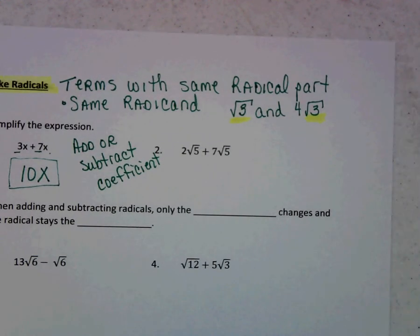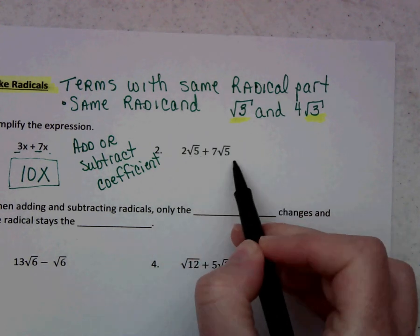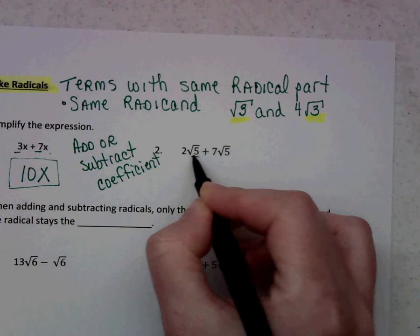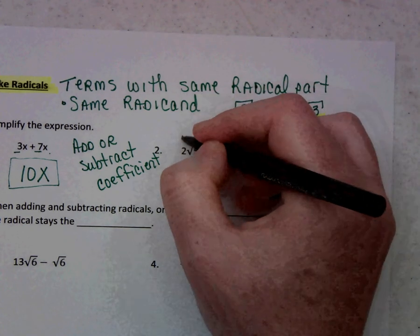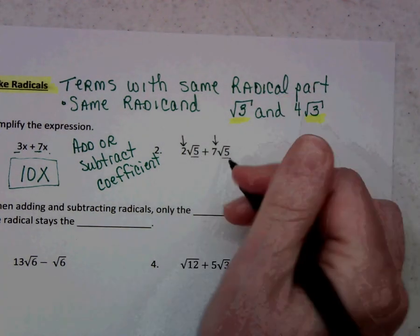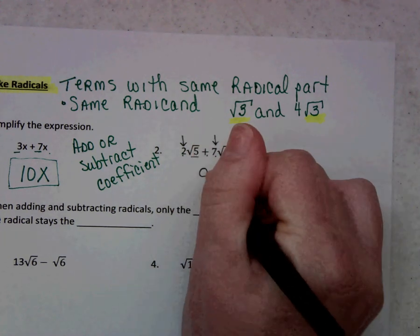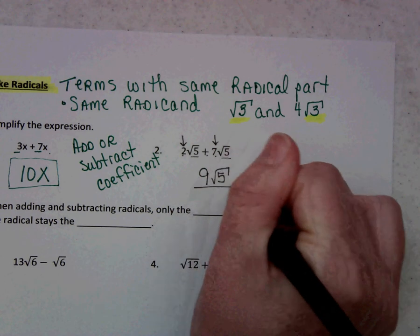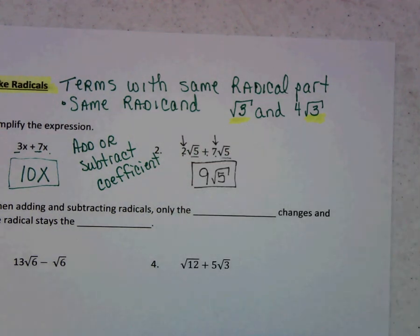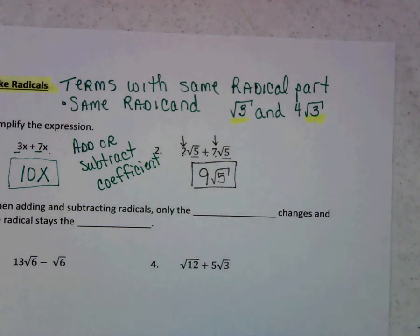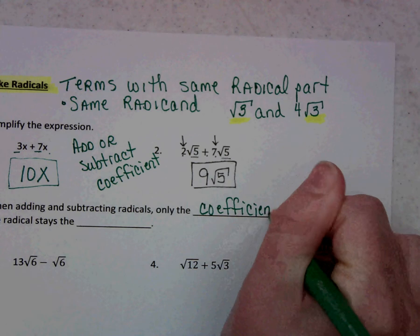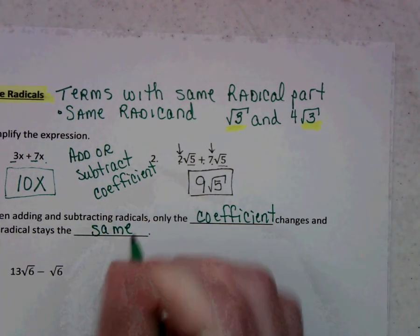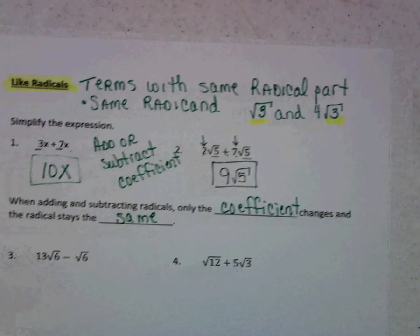Let's look at example number 2. This is a radical expression because it has radicals. They both have the same radical part, so all we have to do is add their coefficients — just like if these were x's. So 2 plus 7 is 9, and then it stays the square root of 5, giving us 9 times the square root of 5. Just a reminder: when adding and subtracting radicals, only the coefficient changes and the radical stays the same.